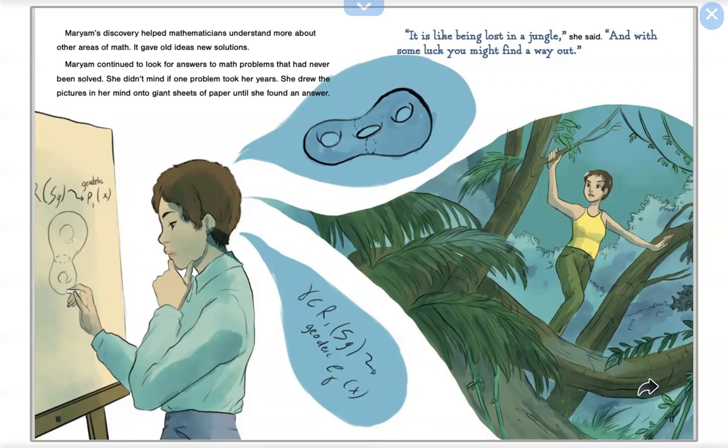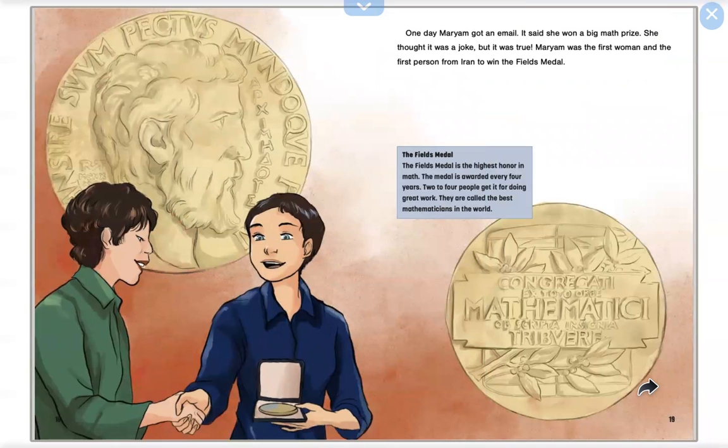One day, Maryam got an email. It said she won a big math prize. She thought it was a joke, but it was true. Maryam was the first woman and the first person from Iran to win the Fields Medal. The Fields Medal is the highest honor in math. The medal is awarded every four years. Two to four people get it for doing great work. They are called the best mathematicians in the world.